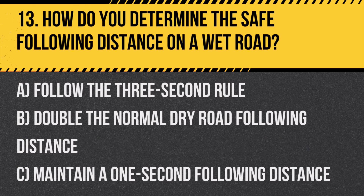Question 13: How do you determine the safe following distance on a wet road? A. Follow the three-second rule. B. Double the normal dry road following distance. C. Maintain a one-second following distance. Answer: B. Double the normal dry road following distance. Wet roads require more stopping distance, so it's safer to increase the following distance.